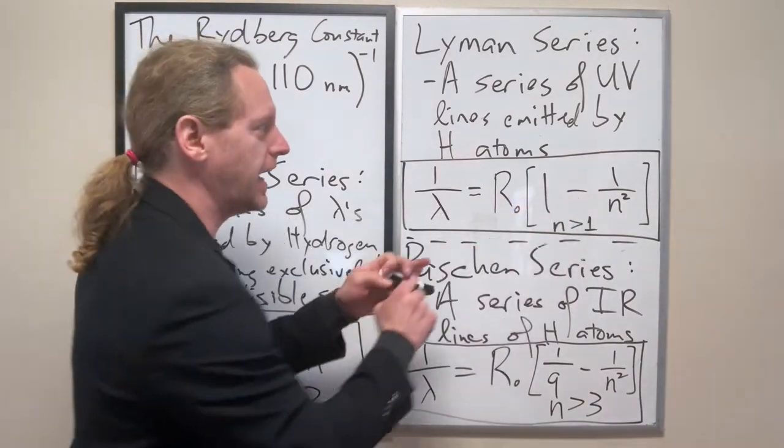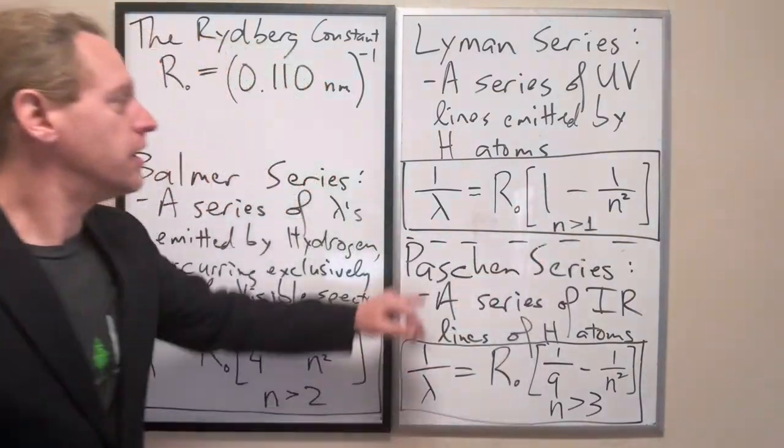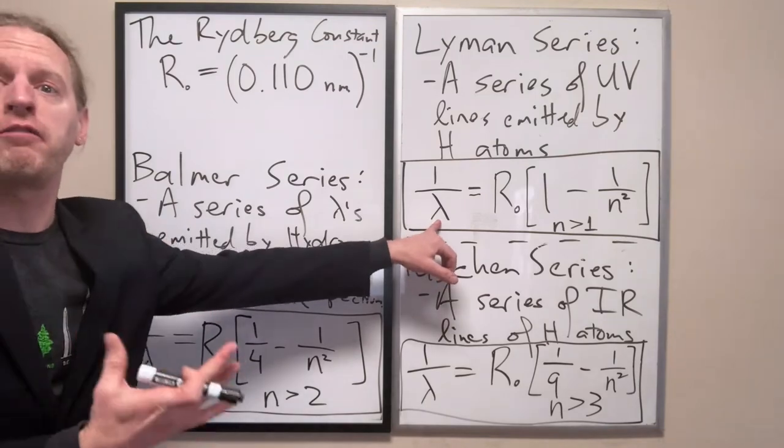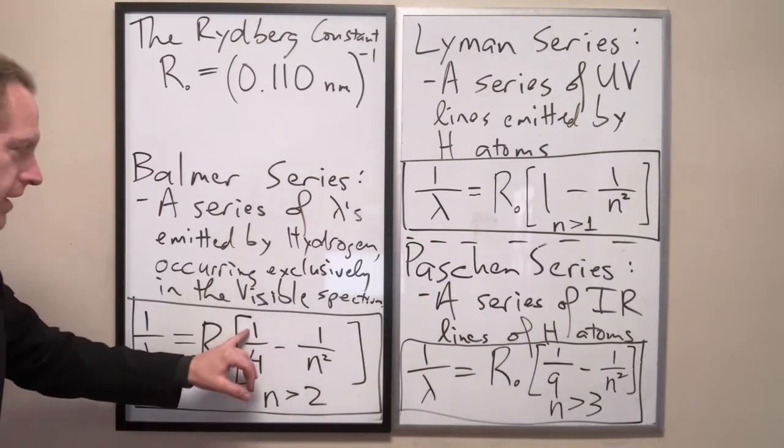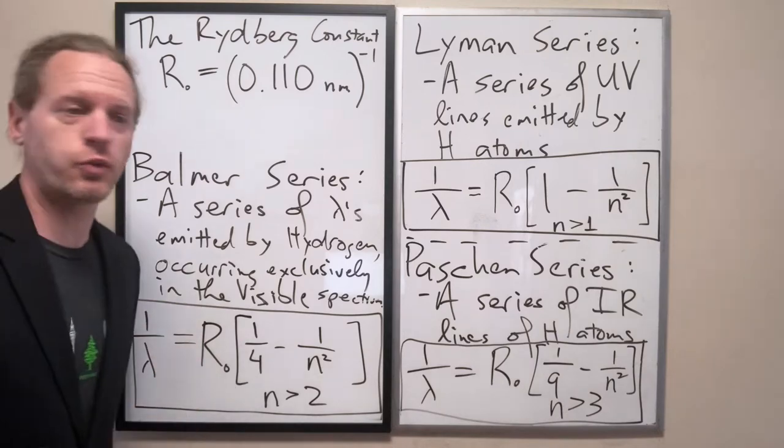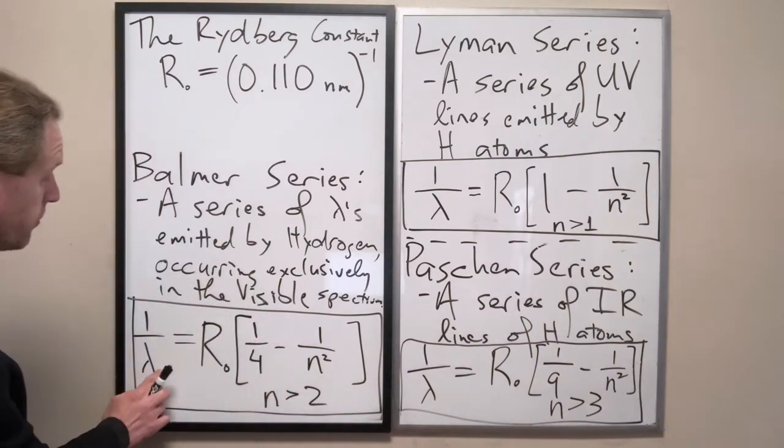If you set that value there to 1, the answers you get for lambda all fall in the ultraviolet part. If you set that thing equal to 1 half squared, these all give you visible wavelengths.